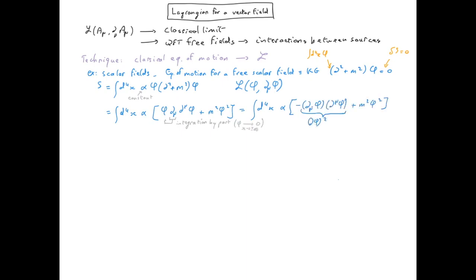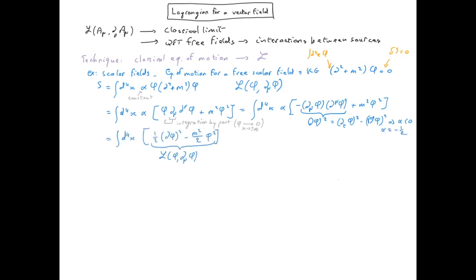Keep in mind that we always consider that our field is zero at the infinite boundaries of spacetime. We now fix the sign of alpha by requiring that the kinetic energy must be positive — that is, the sign in front of delta phi squared should be positive. And because we already have a minus sign, that means that alpha has to be negative, and by convention we fix it to be minus one half. As the action is the spacetime integral of the Lagrangian, we therefore recognize the Klein-Gordon Lagrangian for a free real scalar field.